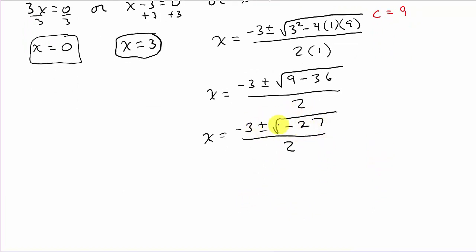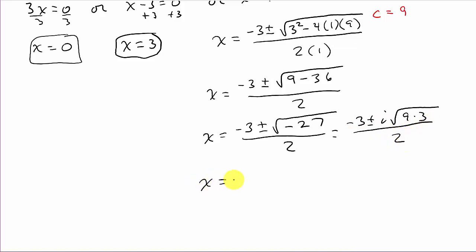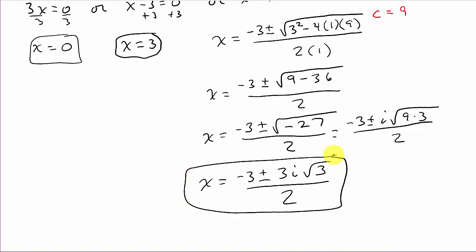Simplifying: the square root of negative 27 becomes i times the square root of 27, and since 27 equals 9 times 3, that simplifies to 3i square root of 3. So x equals negative 3 plus or minus 3i square root of 3, all over 2. That gives us our other solutions, and in total we have 4 solutions.